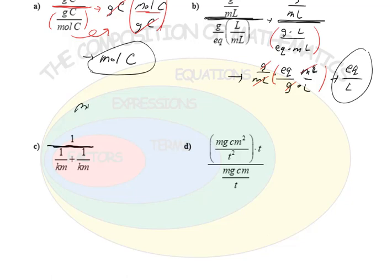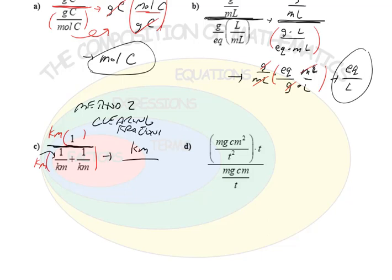So the top and the bottom, I'm going to multiply by the common denominator of km. And if you notice, the numerator just becomes km. The denominator, once I distribute, the km's cancel, leaving just a one. And then if I distribute to the next term, the km in the denominator will cancel with the km I'm multiplying by, leaving just one.